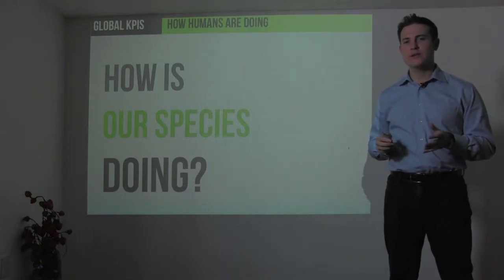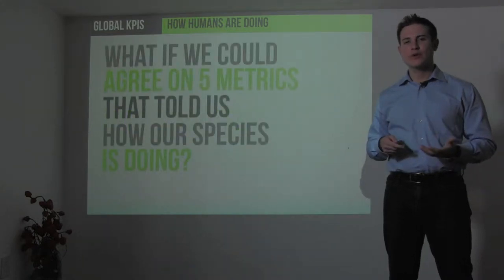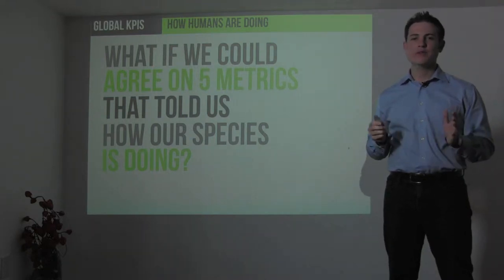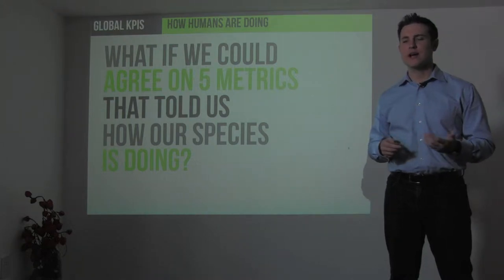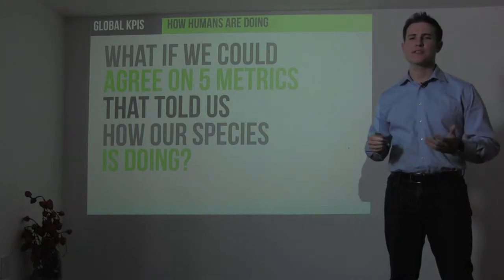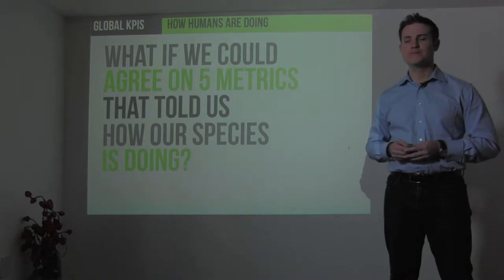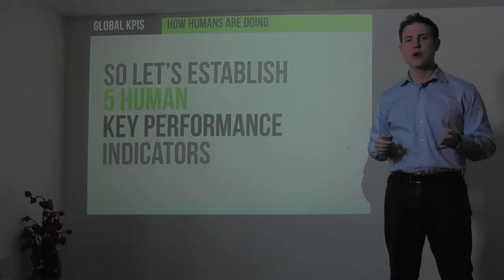What I've tried to do is establish five metrics — five basic KPIs that, if we agreed on, could tell us over time how our species is doing. Of course, there are way more than five KPIs that could be used, but I think it's important to select a few and go from there. So let's establish the five following indicators of human progress.